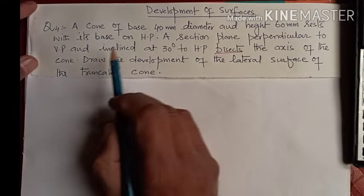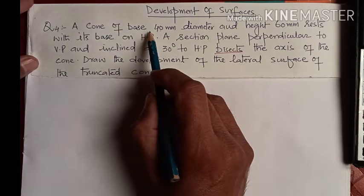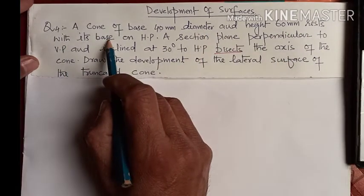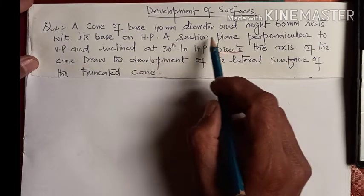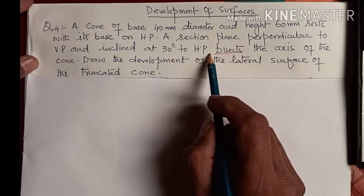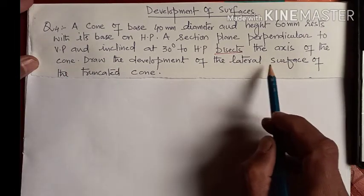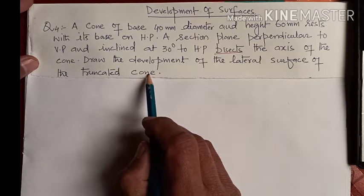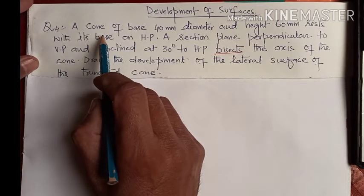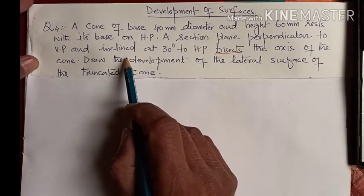We'll do one more question today on the development of surfaces — question number four. A cone of base 40mm diameter and height 60mm rests with its base on HP. A section plane perpendicular to VP and inclined at 30 degrees to HP bisects the axis of the cone. Draw the development of the lateral surface of the truncated cone.